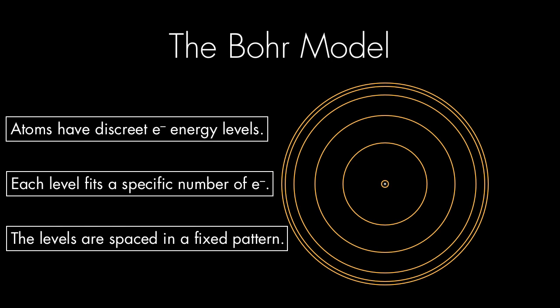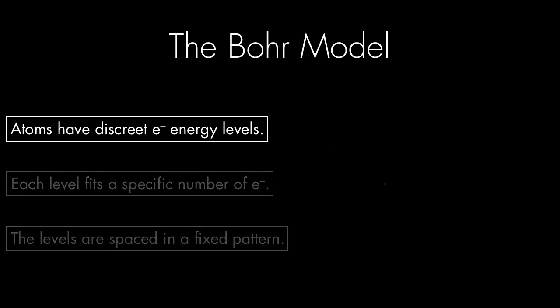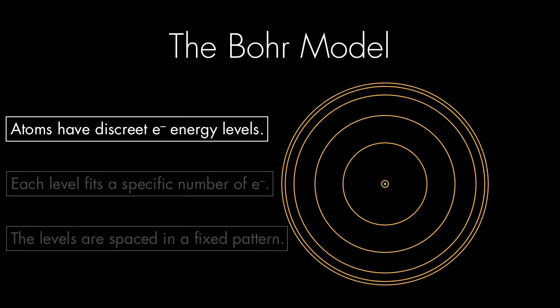Let's look at each one of these points in more detail. The electron energy levels of atoms are discrete, which means that the electrons can only travel in these specific levels. They can jump between them, but they cannot go in between them.